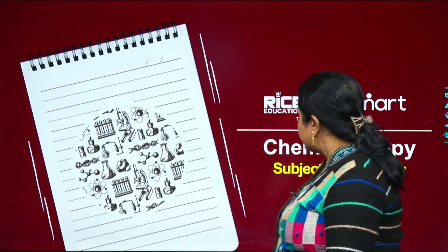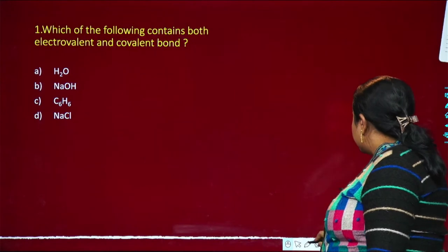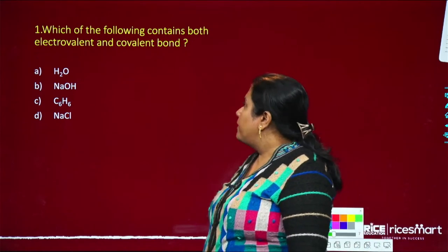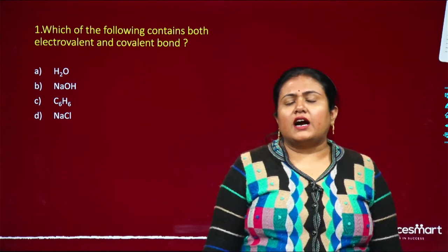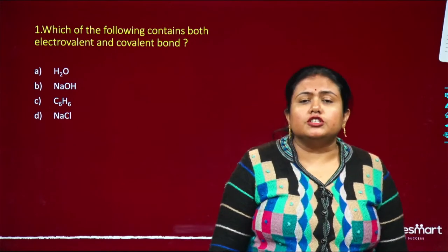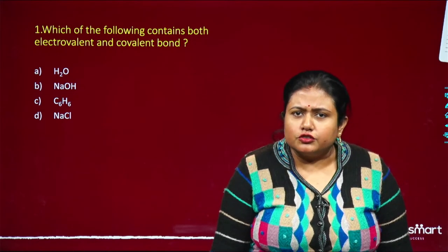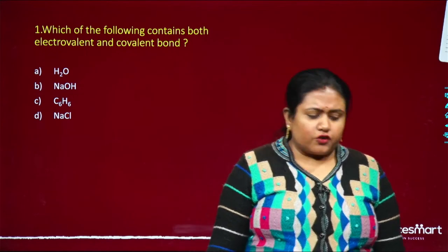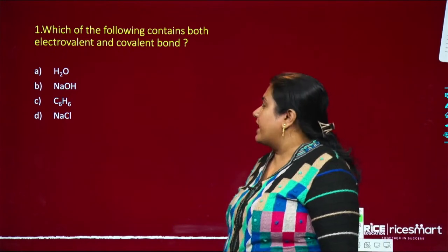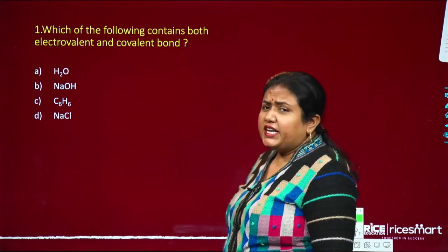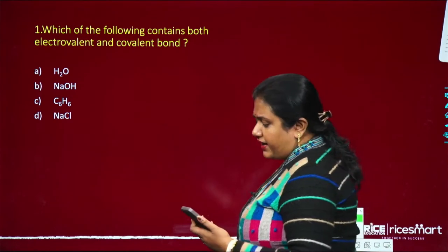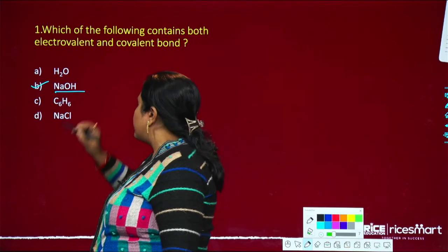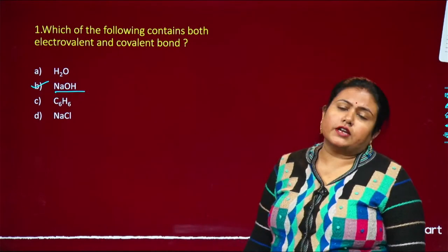Let's go directly to question answers discussion. The first question: which of the following compounds contains both electrovalent and covalent bonds? Electrovalent is an ionic bond and covalent bond is a sharing bond. Which compound has both types of bonds present? The answer to question number one is option B: Sodium Hydroxide. In sodium hydroxide, both electrovalent and covalent bonds are present.